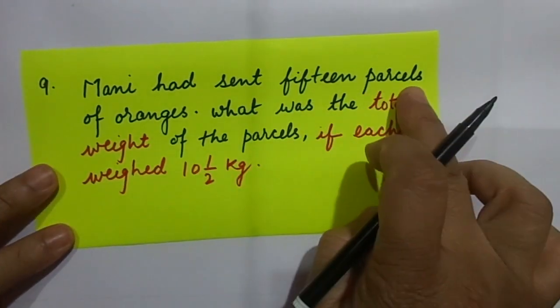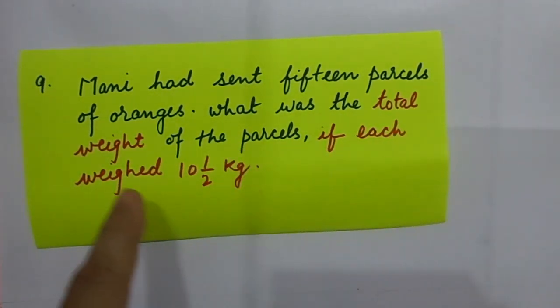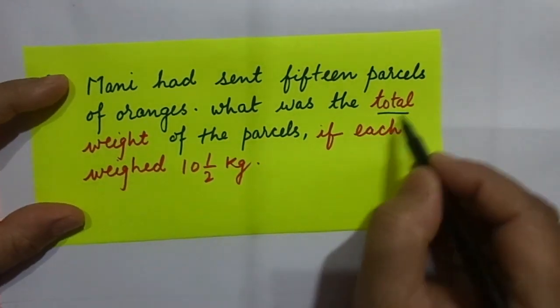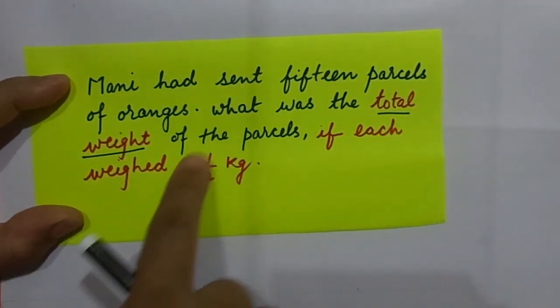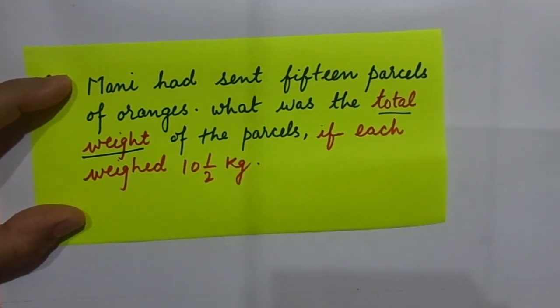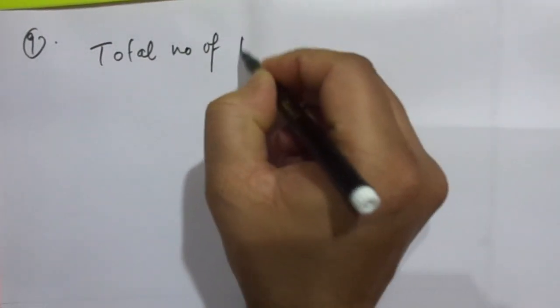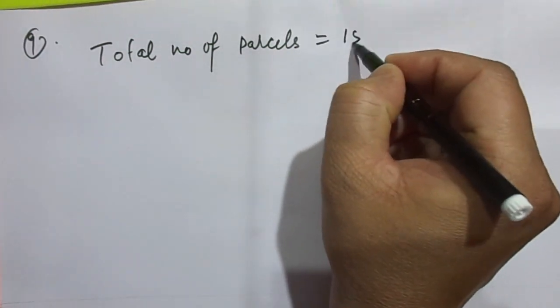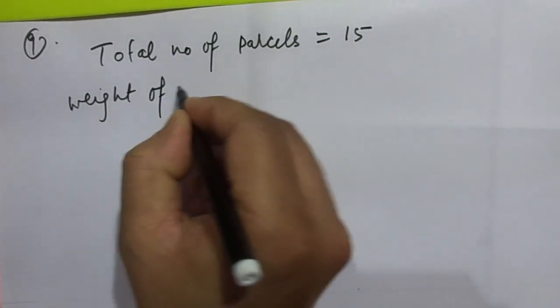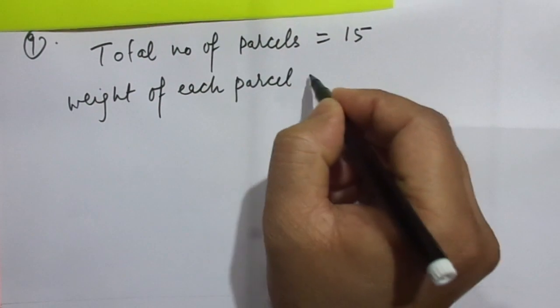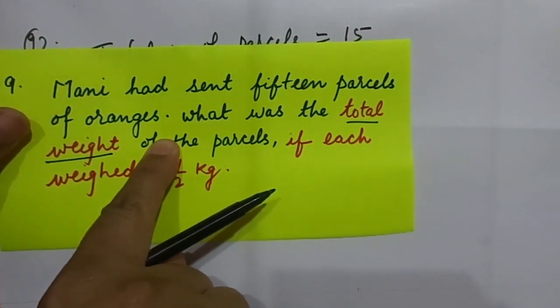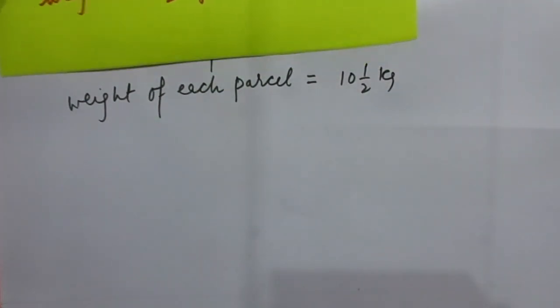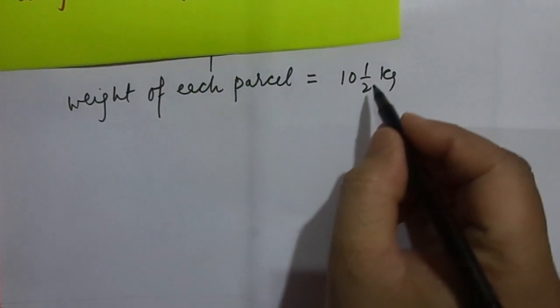Money had sent fifteen parcels of oranges. What was the total weight of the parcel? They are asking the total weight of the parcel if each weighs ten and a half kg. I am going to multiply fifteen with ten and a half. The presentation matters. Total number of parcels is equal to fifteen. Weight of each parcel is equal to ten and a half kg. Whatever they had given me, I wrote the same thing.